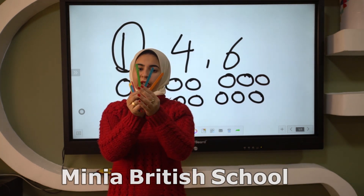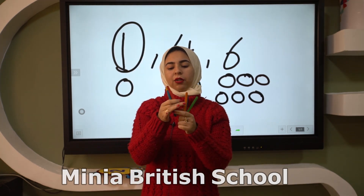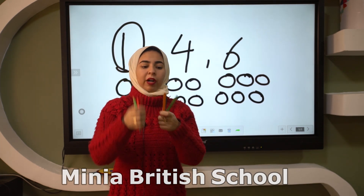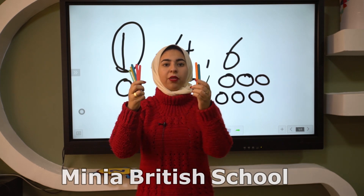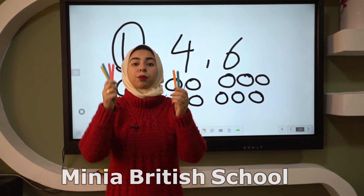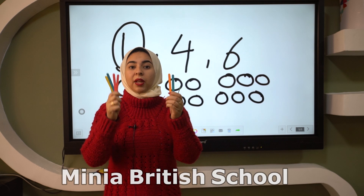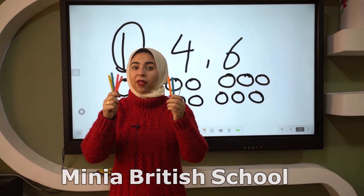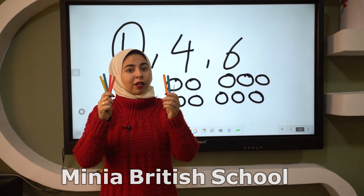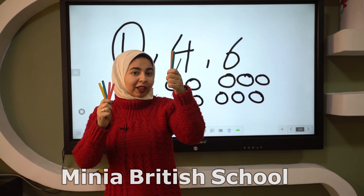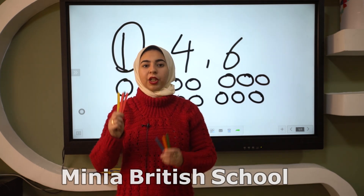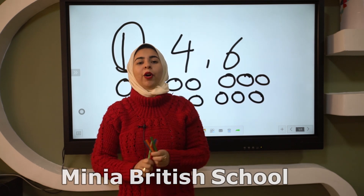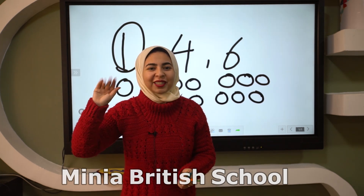Here I have three sticks and here I have five sticks. Which one is the smallest number — five or three? Three! Excellent! So three is smaller than five. Thank you KG, see you next time — goodbye!